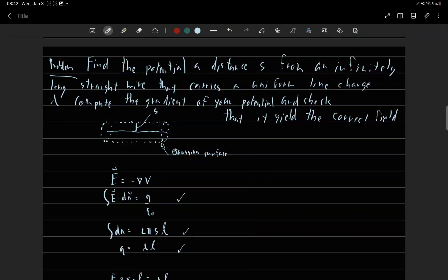Find the potential at distance s from an infinitely long straight line that carries a uniform line charge, lambda. Compute the gradient of your potential and check that it yields the correct field.